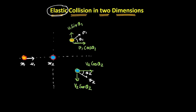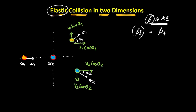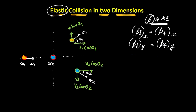Since the collision is elastic, both momentum and kinetic energy are conserved. For momentum in two dimensions, the initial momentum in the x-direction equals the final momentum in the x-direction, and similarly for the y-direction. Since kinetic energy is a scalar quantity, we simply say initial kinetic energy equals final kinetic energy. This gives us three equations to work with.